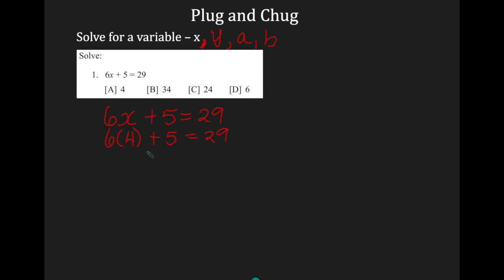Next, I'm going to chug through the problem using order of operations. So I have multiplication and addition. Multiplication would go first. 6 times 4 is 24 plus 5 equals 29. If I add 24 plus 5, I get 29 equals 29. The left-hand side is equivalent to the right-hand side. So I found my answer on the first try. So my answer is 4, x is 4.